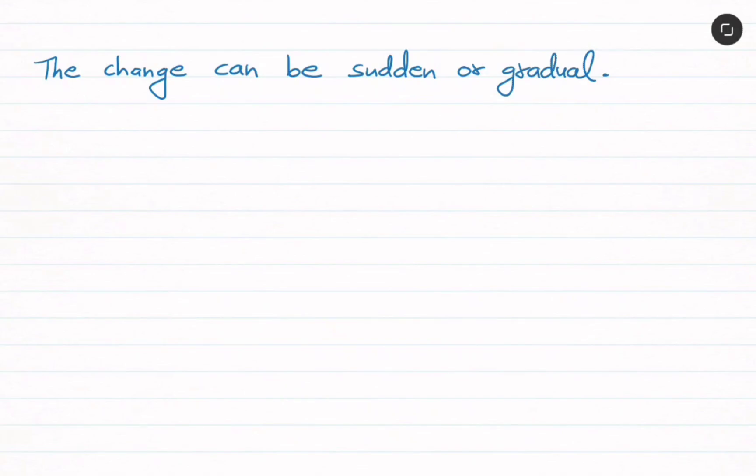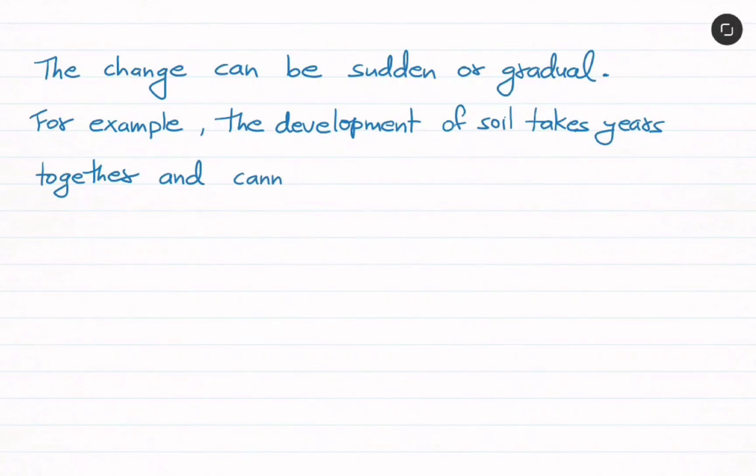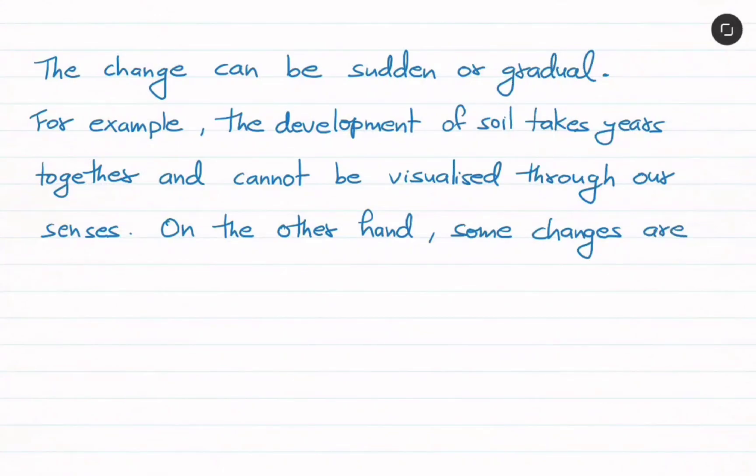For example, the development of soil takes years together and cannot be visualized through our senses. So the change can be sudden or gradual. The formation of soil is a gradual process.